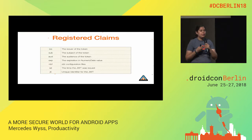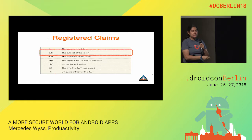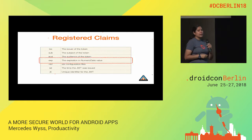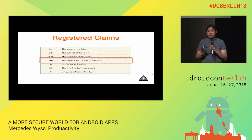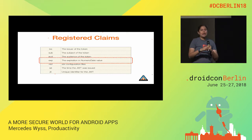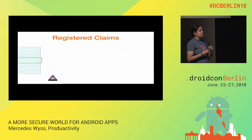Registered claims are the most commonly used. The 'sub' claim identifies the user that the JWT represents. The expiration claim creates tokens that expire — very common in financial applications. For example, after 10 minutes of inactivity, the backend will tell the user their session has expired and require them to log in again. Other claims are optional.